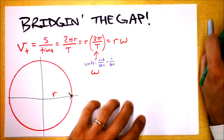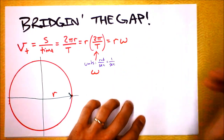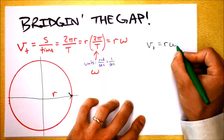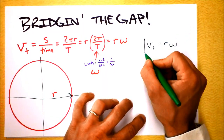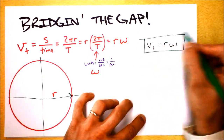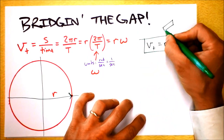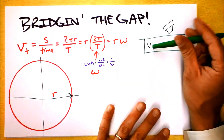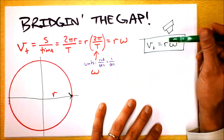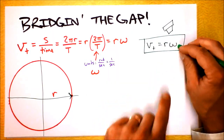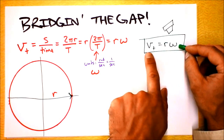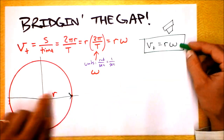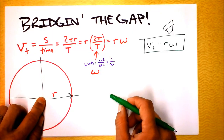Tangential speed v_T equals r times angular velocity ω — that's so important I'm putting it in a box and drawing a flower pot around it. This means that for a given angular velocity, your tangential speed will be greater if the radius is bigger.